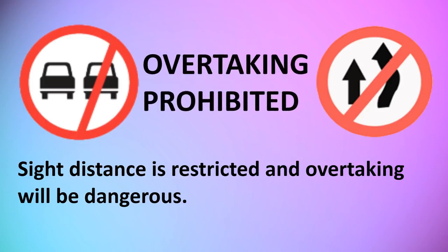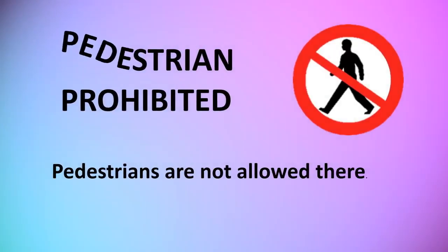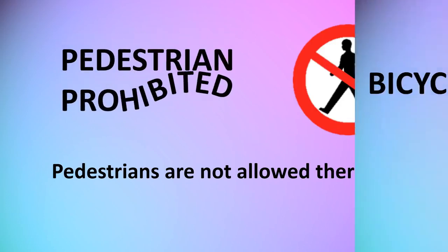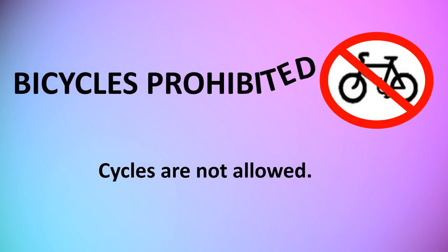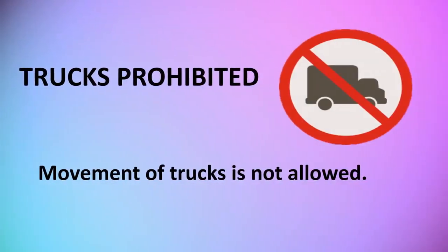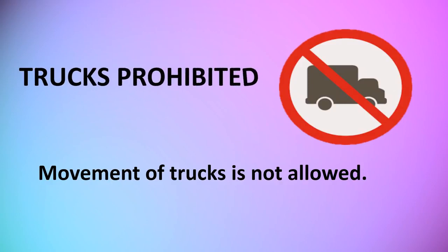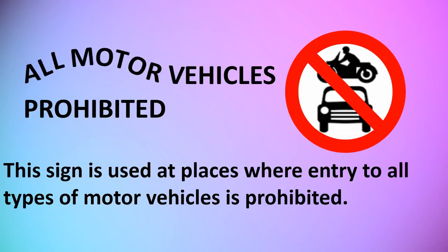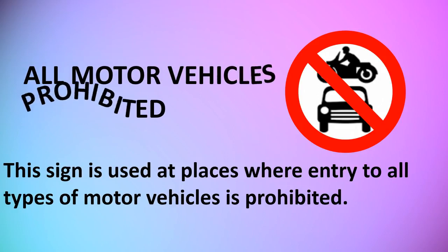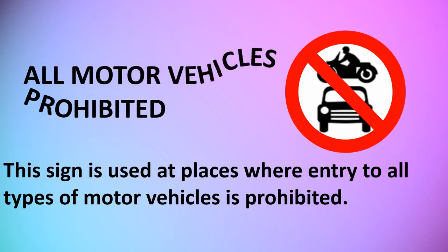Overtaking Prohibited: this sign shows that the side distance is restricted and overtaking will be dangerous. Pedestrian Prohibited: this sign indicates that pedestrians are not allowed there. Bicycles Prohibited: this sign indicates that cycles are not allowed. Trucks Prohibited: movement of trucks is not allowed.